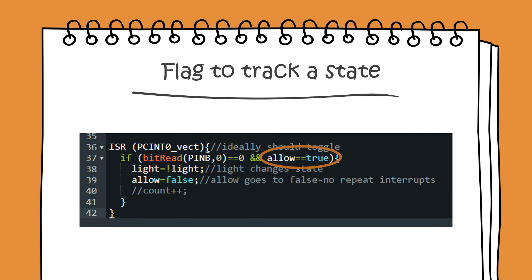We may not want the interrupt to trigger in both directions — we may want it to trigger in only one direction. To make that possible, when the pin goes to 0 the interrupt is allowed, and we use 'allow' as a flag. As soon as the pin value goes to 0, 'allow' is set to false. So when the value goes from high to low the interrupt triggers, but when it goes from low to high the flag has been reset to false and the interrupt would not trigger. We use this small trick with a flag to track state, making the pin change interrupt sensitive in only one direction.